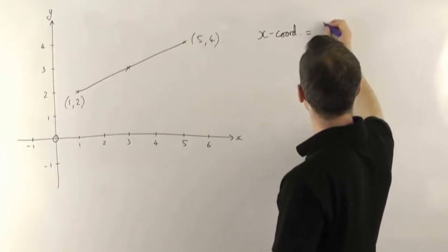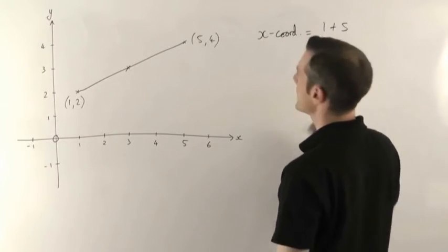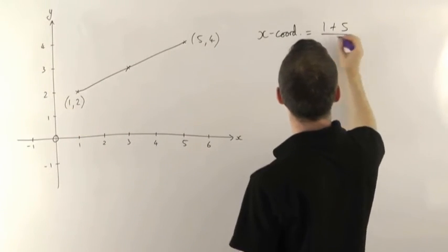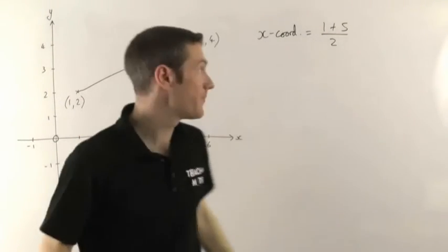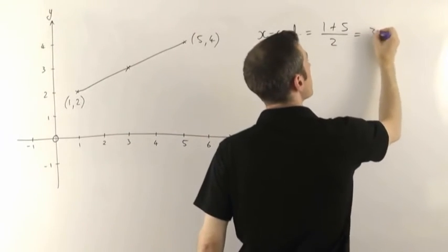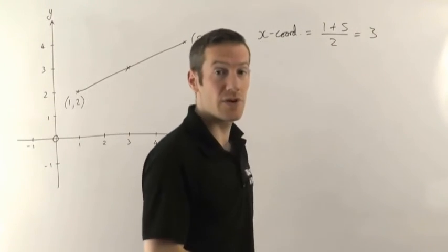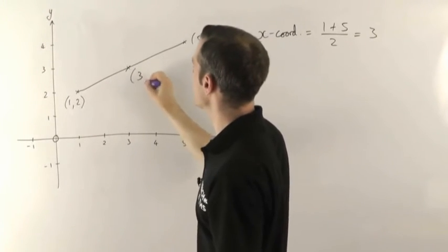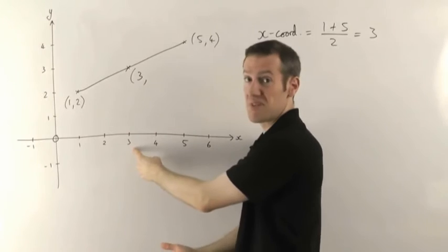So in this case it's going to be 1 plus 5, the x coordinate of that plus the x coordinate of that, and then we divide the answer by 2. So in this case 1 plus 5 gives you 6, divide that by 2 you get 3. So the x coordinate of our midpoint, the x coordinate of this point here is going to be 3 and you can see, yeah it's 3.